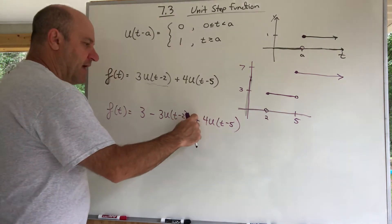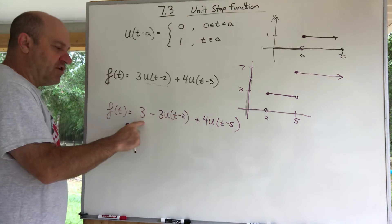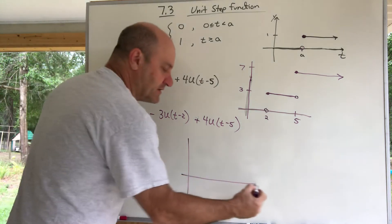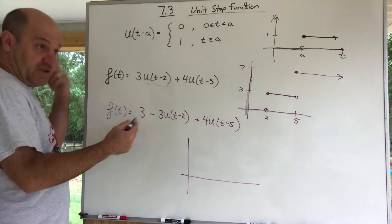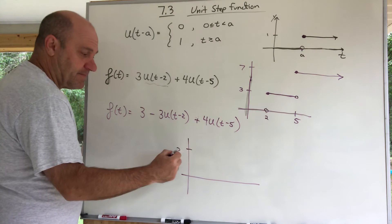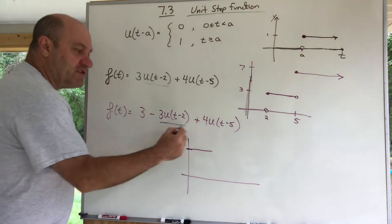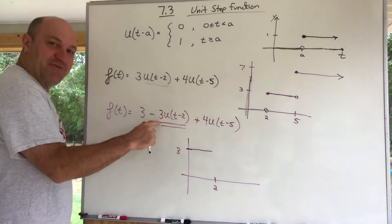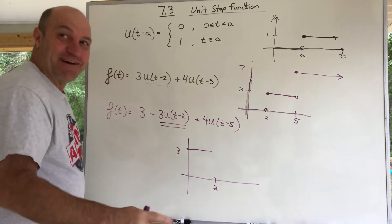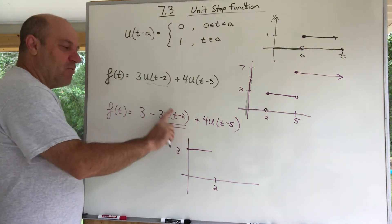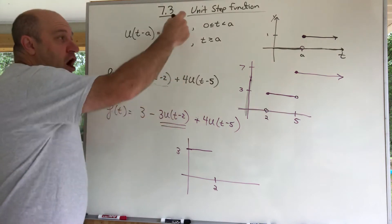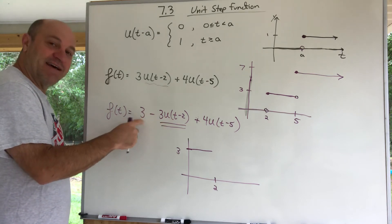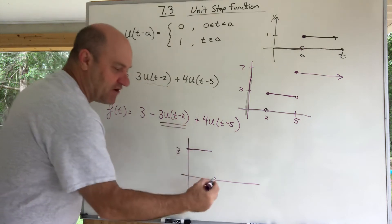I did something a little different here — I started off with a 3 without a unit step function attached. So it starts off being a 3. Until you get to t = 2, it's just a 3. When you get to 2, you turn on the u(t - 2) term, which is a negative 3. Adding negative 3 to the 3 cancels it out to zero. So by turning this on, we essentially cancel the 3 off and drop down to zero.